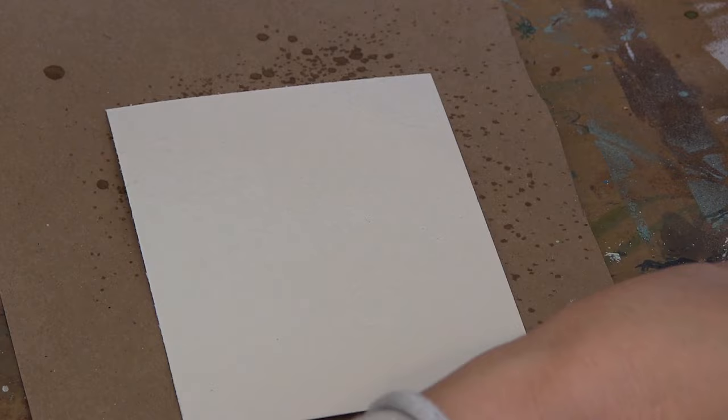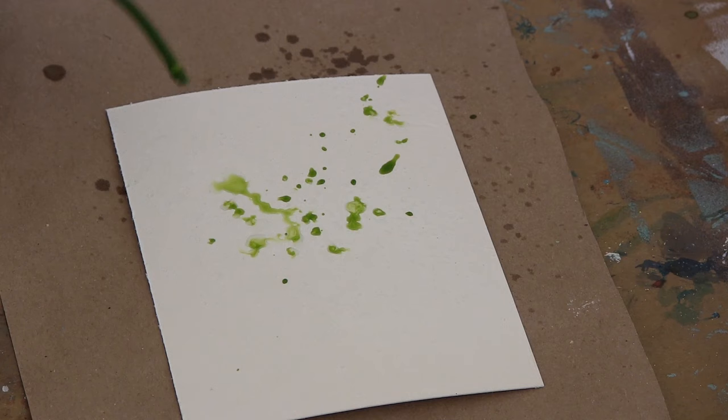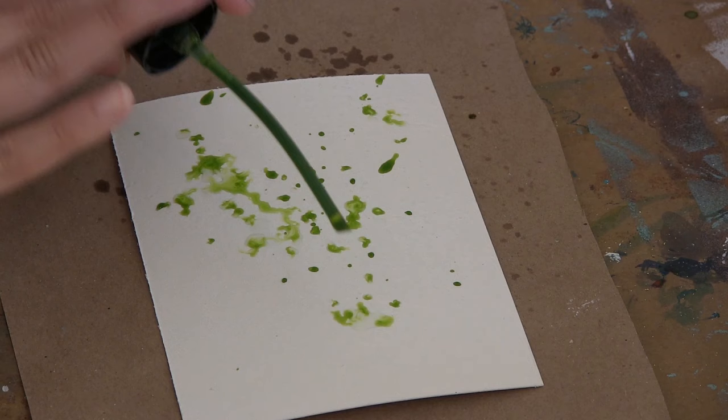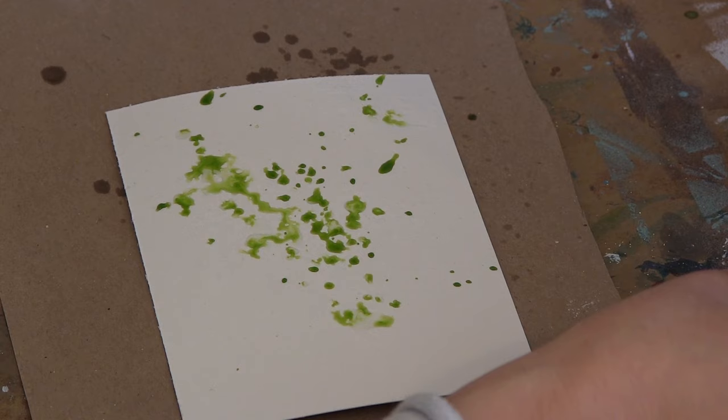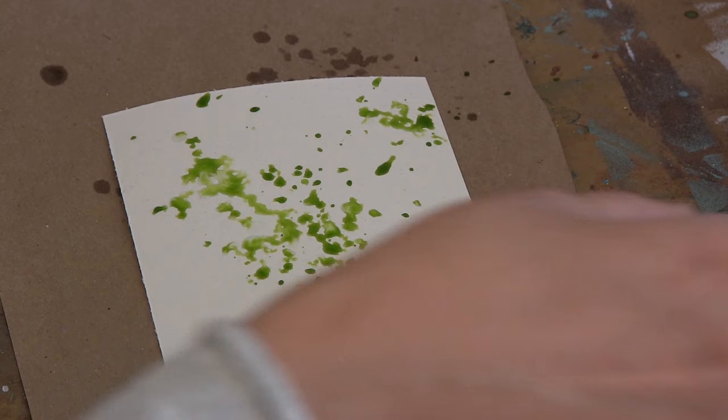But I will alternate between water, spritzing water, and spritzing various colored mists. And this is definitely something that's worth playing around with on maybe a larger scrap piece of white paper. I like to tap my mists out. You get different effects by spritzing with water first and then mist, or spritzing with mist first and then water, spritzing with one mist and then while it's still wet adding in another colored mist.